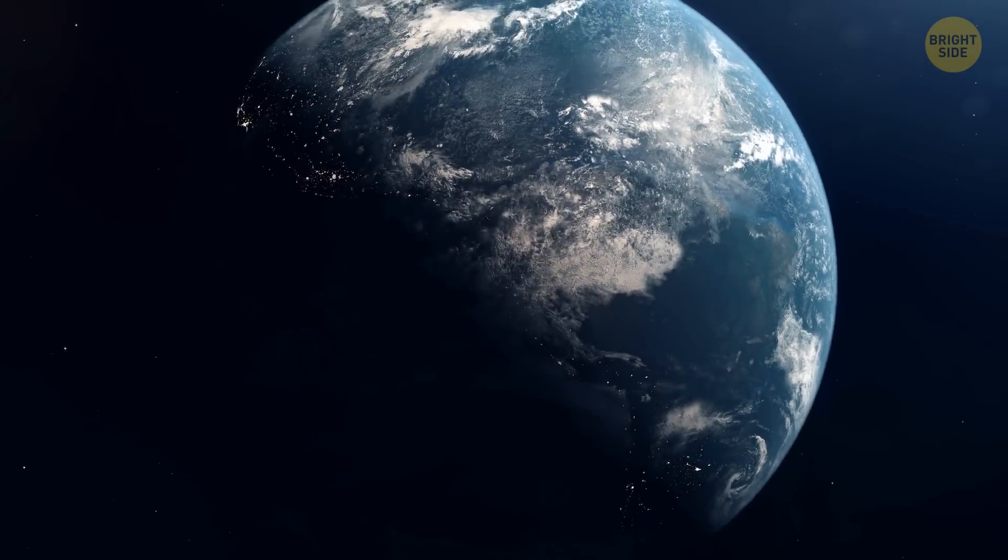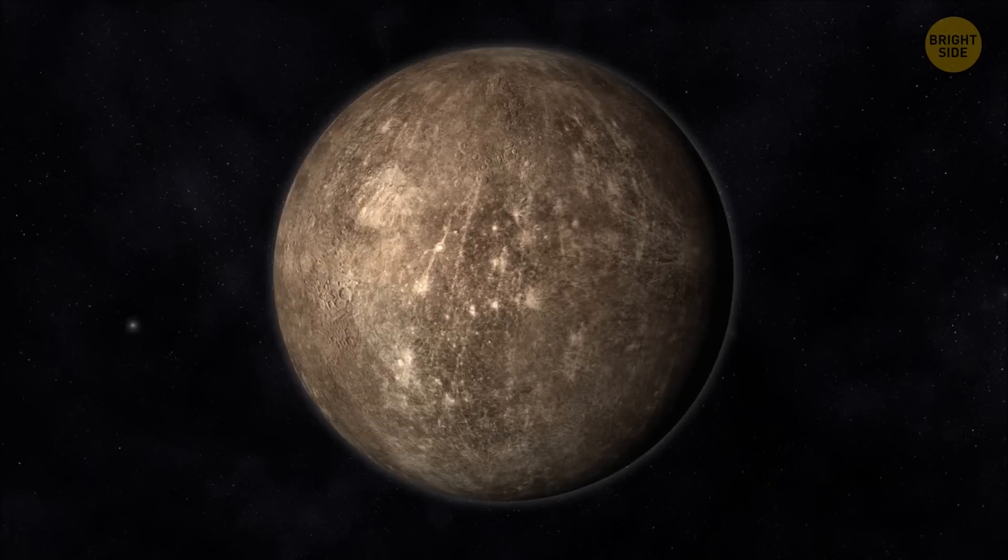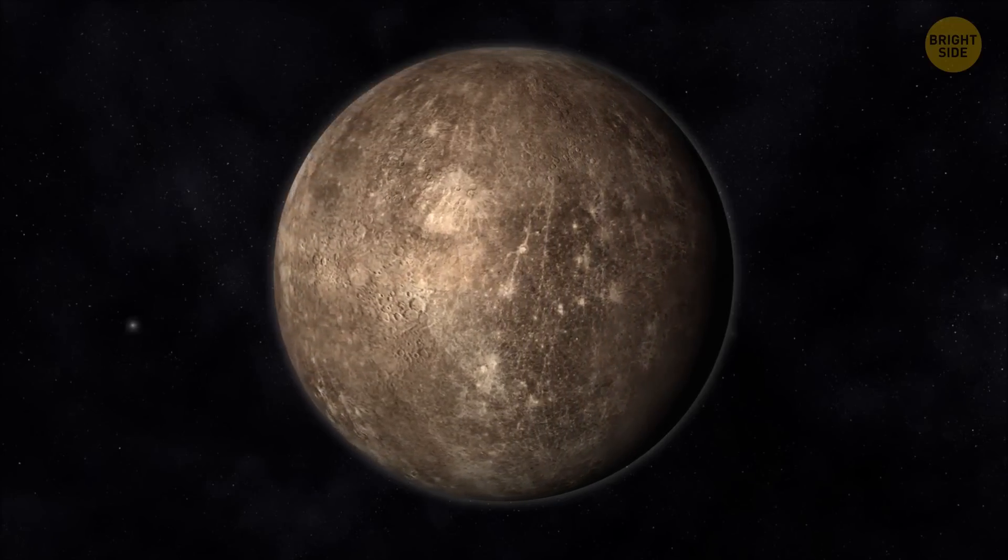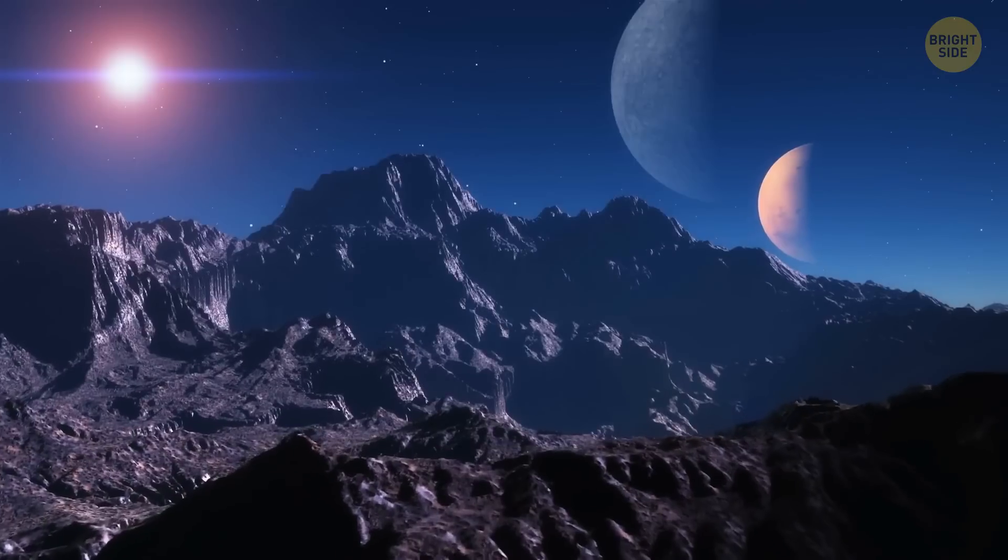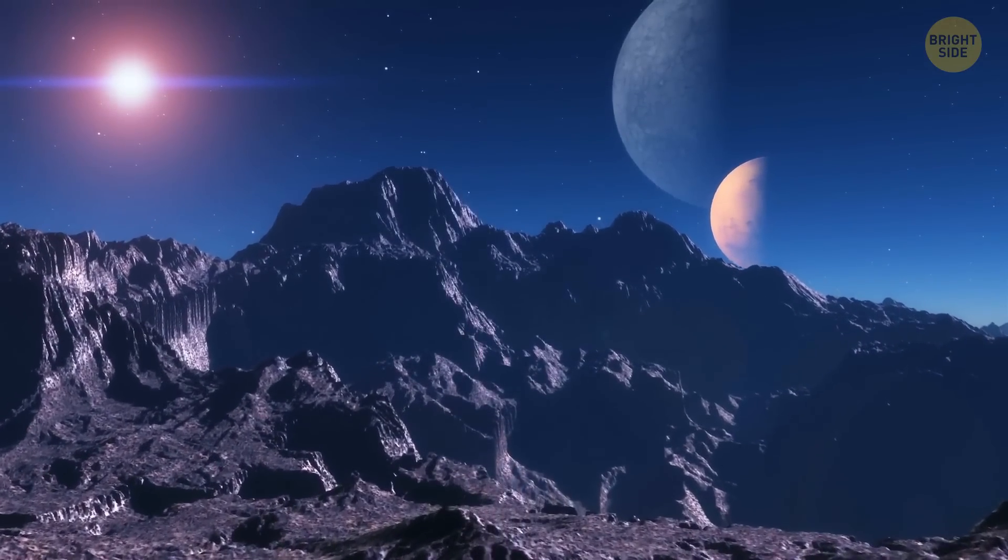Earth might not be the only tectonically active planet in the Solar System. Astronomers have spotted some landforms looking like cliffs on Mercury. If it's so, the tectonic activity could explain the rapid shrinking of the planet.